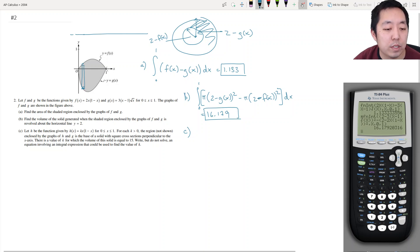There is a value of k for which the volume of the solid is equal to 15. Write but do not solve an equation involving an integral expression that could be used to find the value of k. Okay. So enclosed between h and g. So g is on the negative side, this function. h is kind of like f of x but it varies. So it's on the top because k is greater than 0.